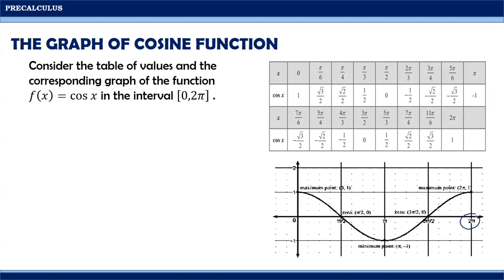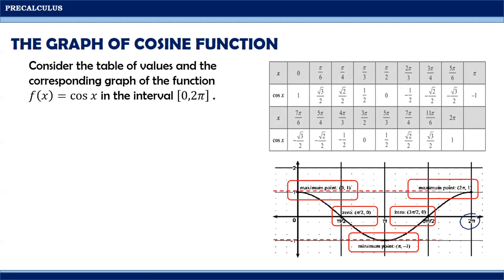One cycle of the graph of the cosine is 0 to 2π, and its maximum points are (0, 1) and (2π, 1). On the other hand, the minimum point is at (π, -1), while its zeros are at π/2 and 3π/2. Also, since the distance between the maximum point and the minimum point is 2 units, the amplitude, which is one-half that distance, will be equal to 1.